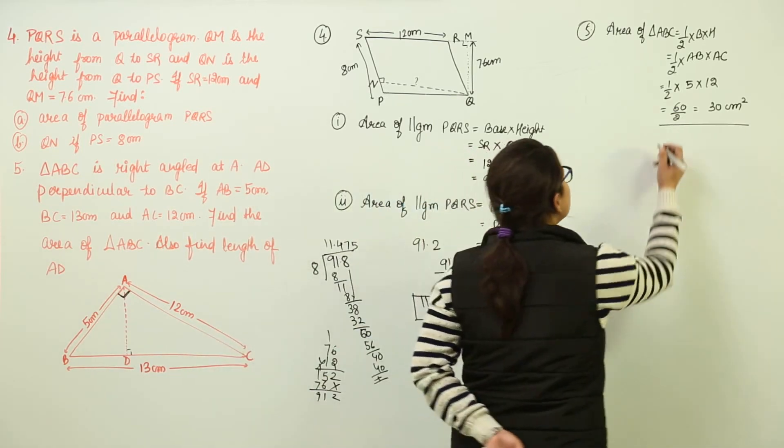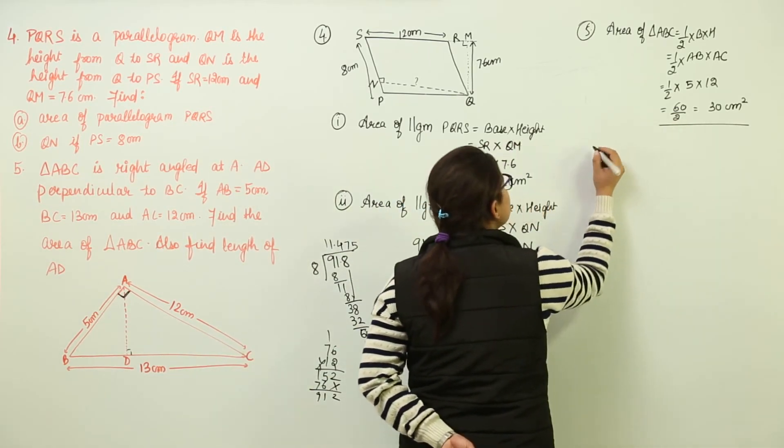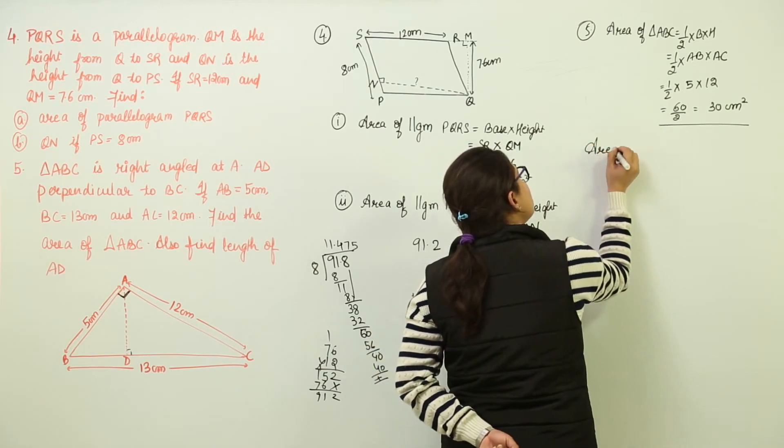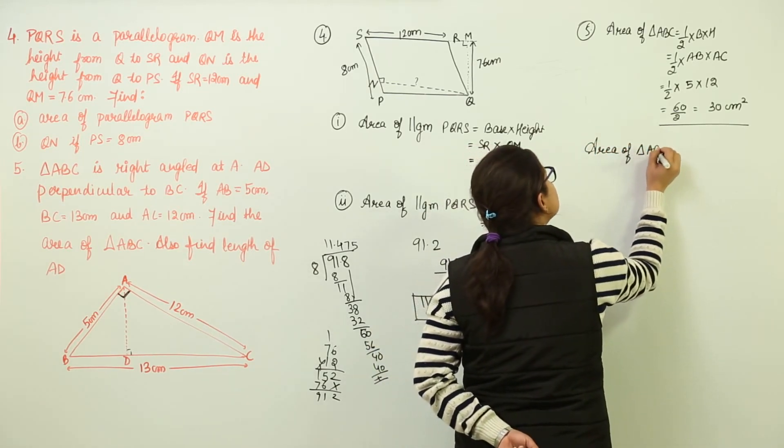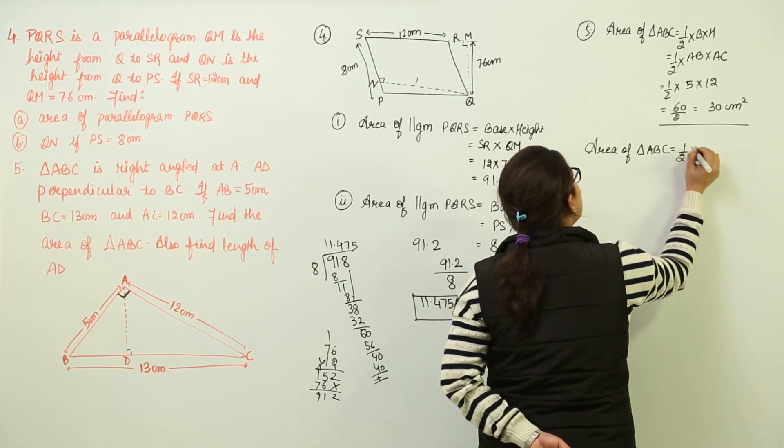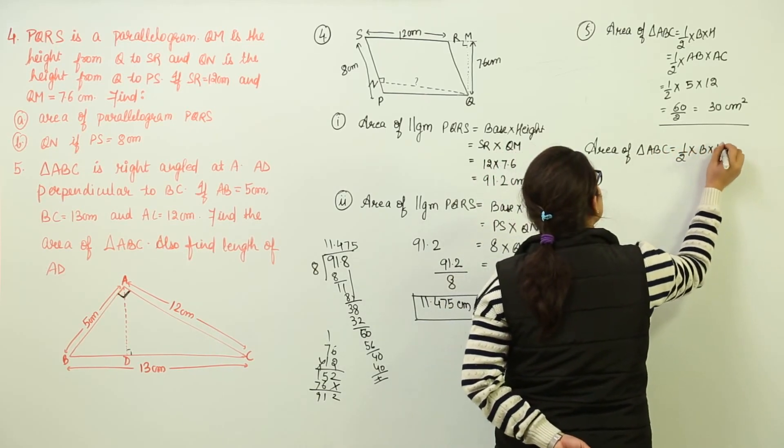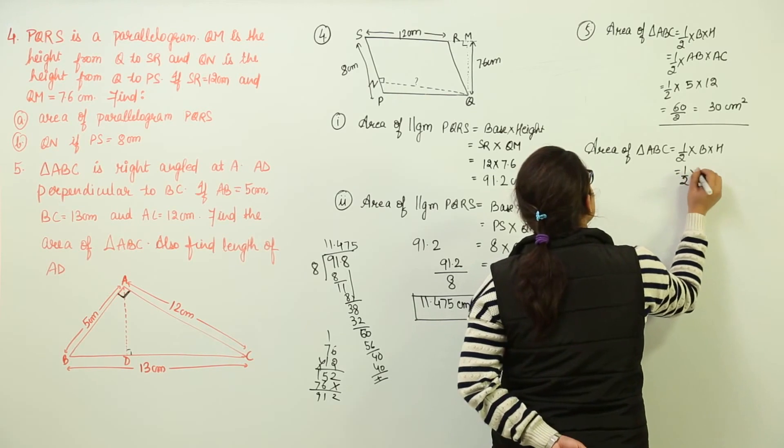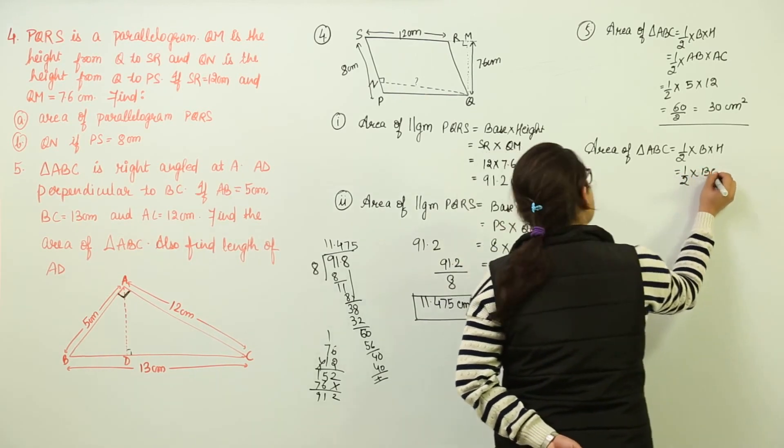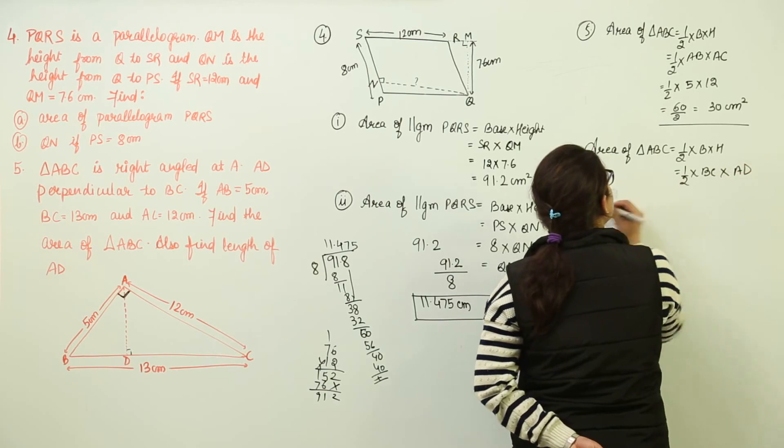So we can do the same. We can write in the next step that area of triangle ABC is equal to half base into height where the base has changed to BC and the height has changed to AD giving us all equal to 30.